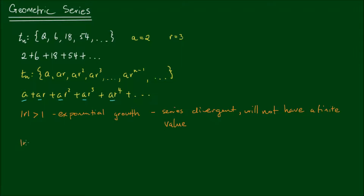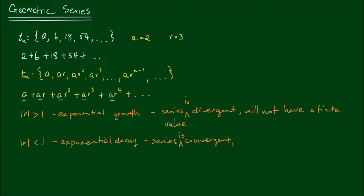Conversely, if the absolute value of the common ratio is less than one, then the sequence displays exponential decay, and so we say the series is convergent. Where the absolute value of r is less than one, the terms after the first term are actually getting smaller and smaller. Which means as the numbers go on, they tend towards zero — so that means the series will actually have a finite value.